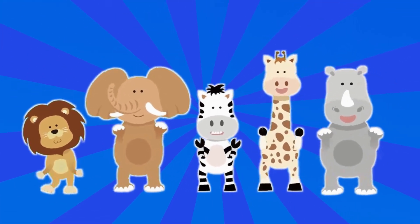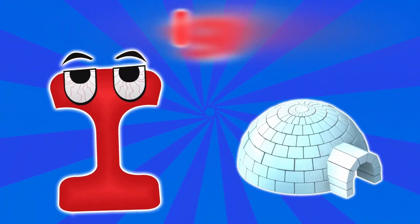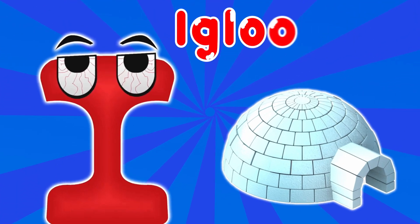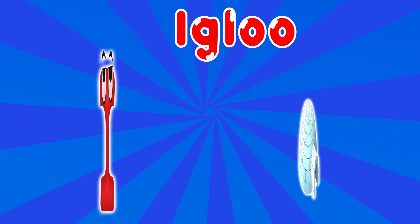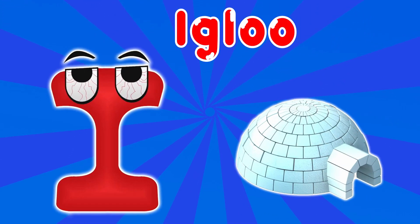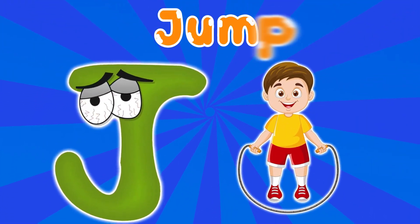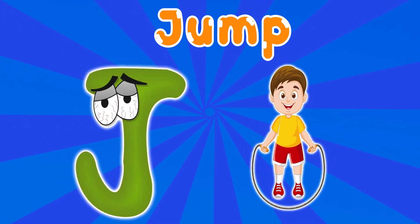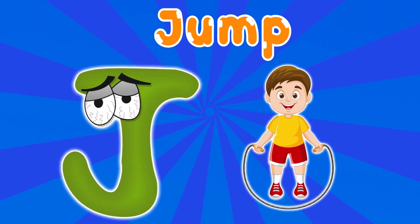I is for igloo, i-i-igloo. J is for jump, j-j-jump.